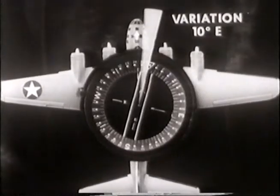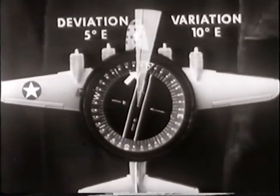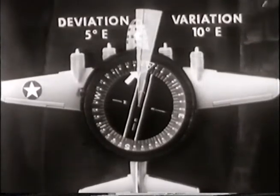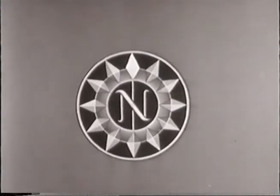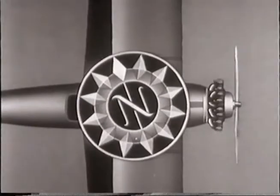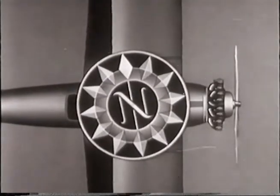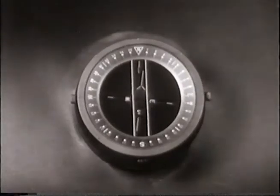Therefore, with a variation of ten degrees east and a deviation of five degrees east, the compass reading of 345 degrees will give the desired course of 360 degrees. Compass north is the direction in which the compass points. It differs from true north by the combined factors of variation and deviation. Navigators would like the magnetic compass to point true north. However, variation causes it to point in a different direction — magnetic north. This factor, combined with the magnetic influence of the airplane itself, called deviation, will produce another reading: compass north. Fortified with a good compass, knowing how to use it in conjunction with his maps, the aerial navigator is able to span oceans and continents, reaching his destination by the most direct route.